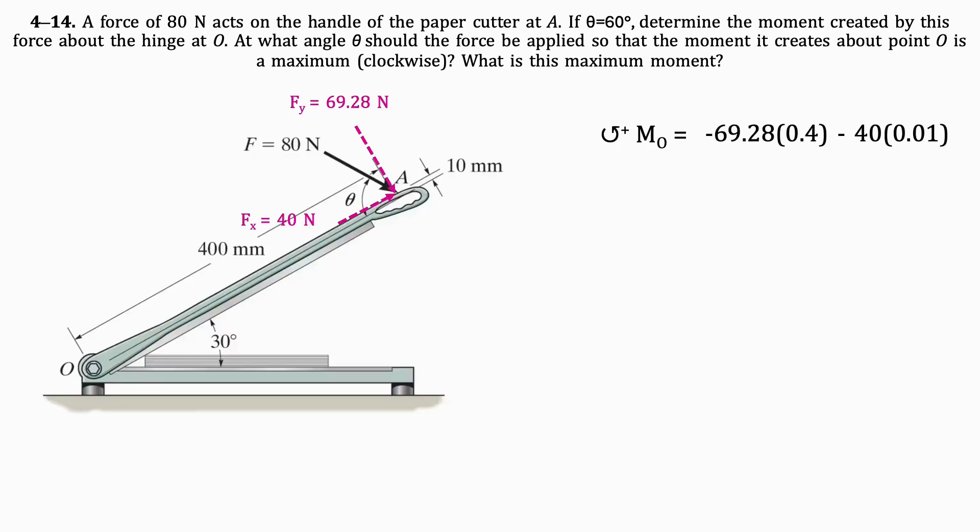The moment of the x component about O is the x component of the force times its distance from O, which is 0.01 meters. The sum of these two moments is 28.1 newton meters in the clockwise direction.